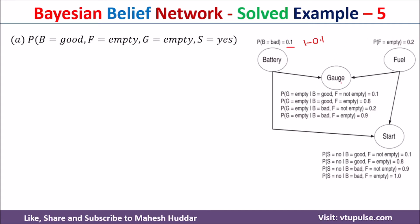The conditional probability for gauge depends on battery and fuel, so we write multiple probabilities. The probability of gauge being empty is given for four conditions: battery good and fuel not empty (0.1), battery good and fuel empty (0.8), battery bad and fuel not empty (0.2), and battery bad and fuel empty (0.9). The probability of gauge being not empty for each condition is simply 1 minus those values.